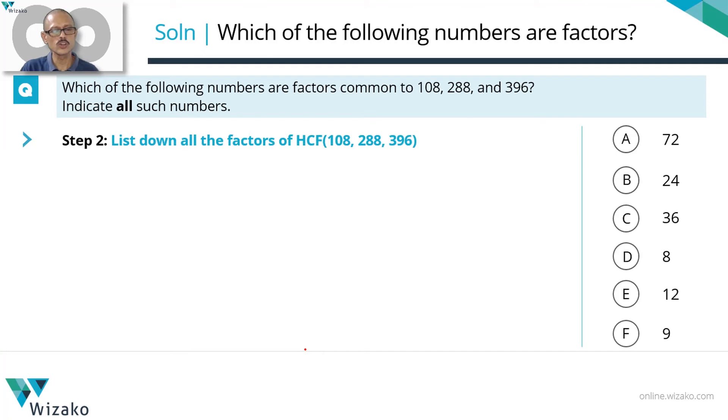Step 2, we're going to list down all factors of 36. I've kept the answer options handy so that after we have listed down the factors, we can pick and choose from the answer options which we find from the factors that we have listed down. The HCF of these three numbers is 36, so we need to list down all factors of 36. How do we quickly list down all factors of 36 and ensure that we have listed down all of those factors?